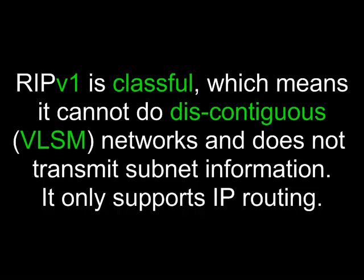RIP version 1 is classful, which means it cannot do discontiguous VLSM, or variable-length subnet mask networks, and does not transmit subnet information. It only supports IP routing.